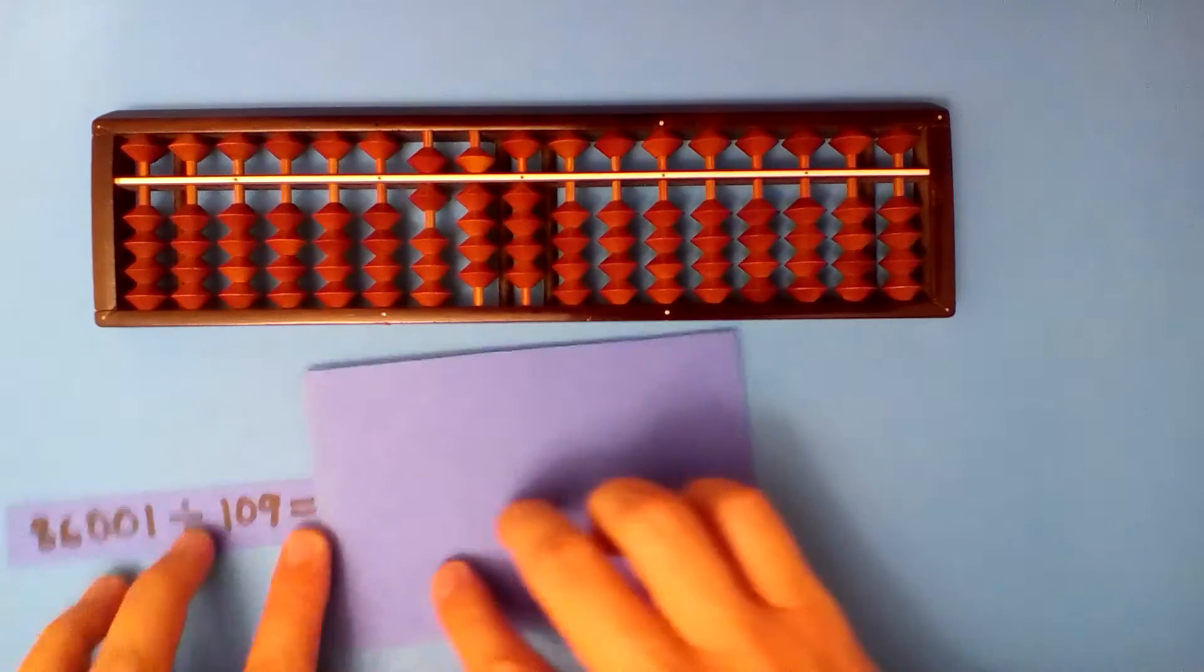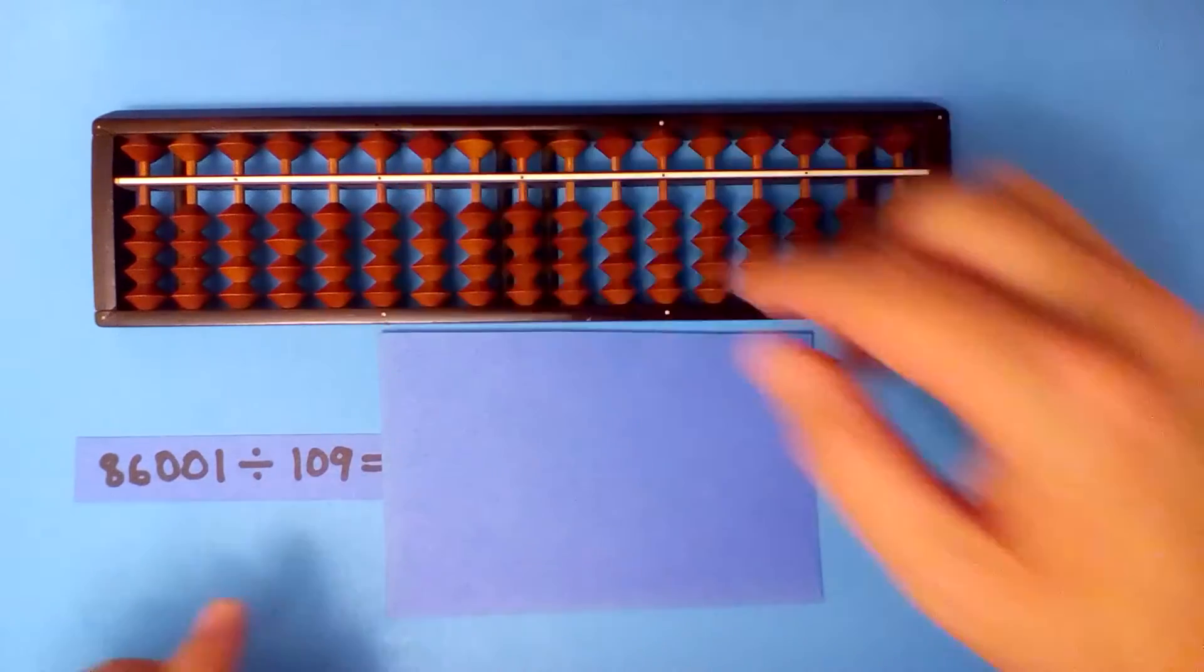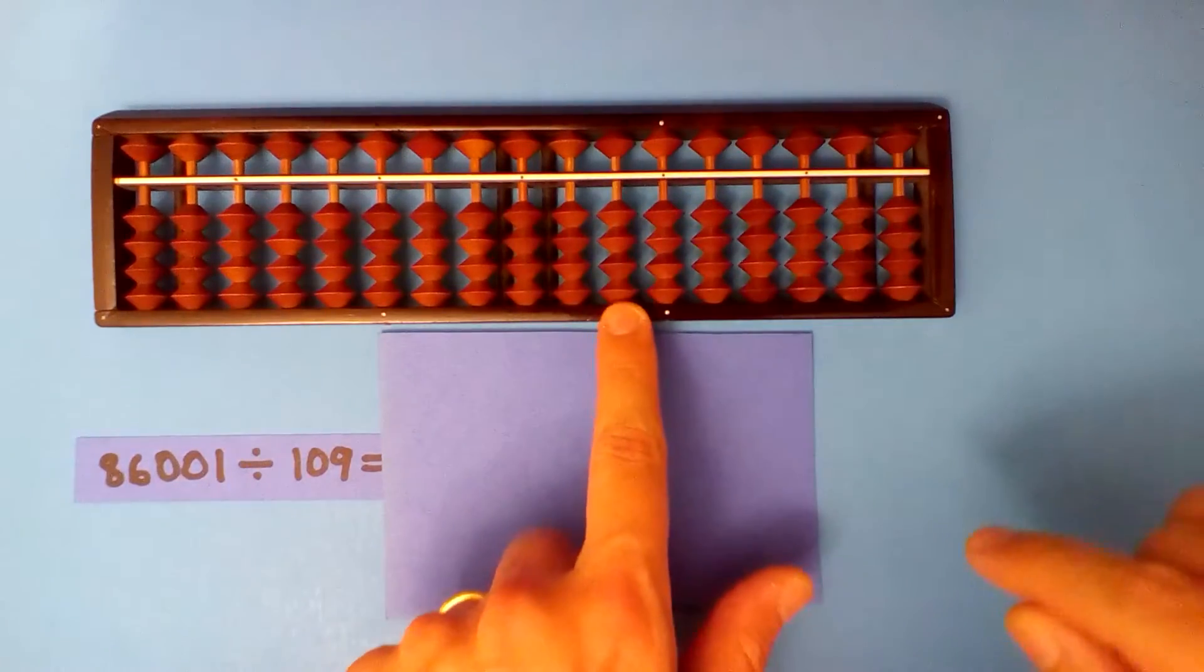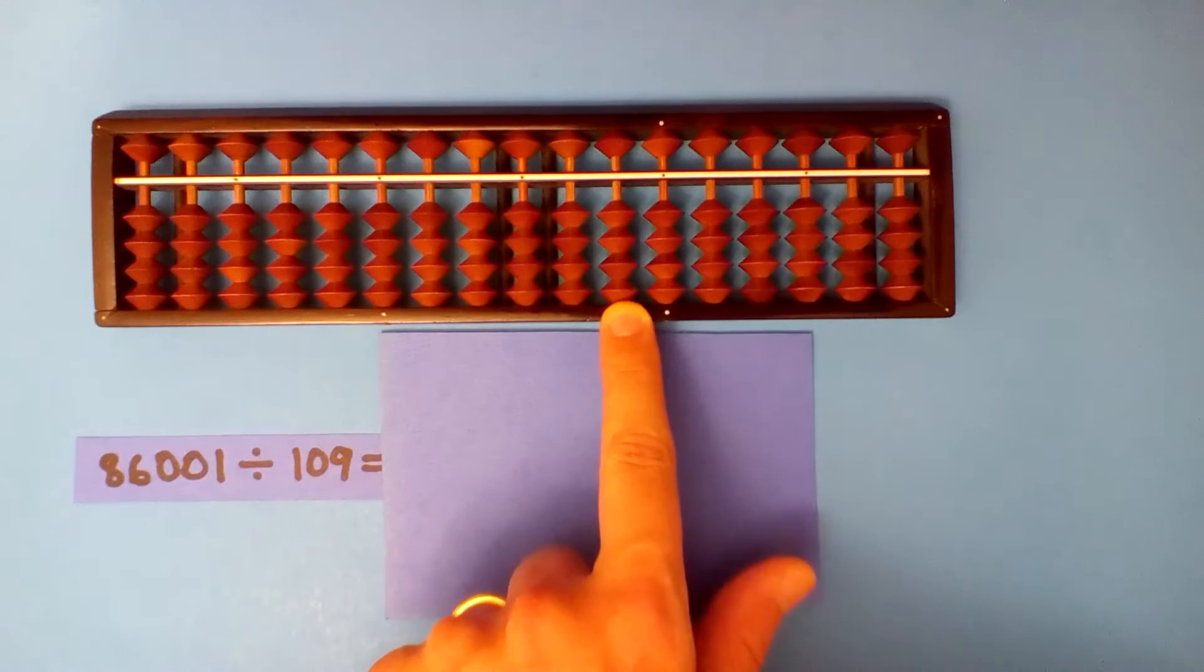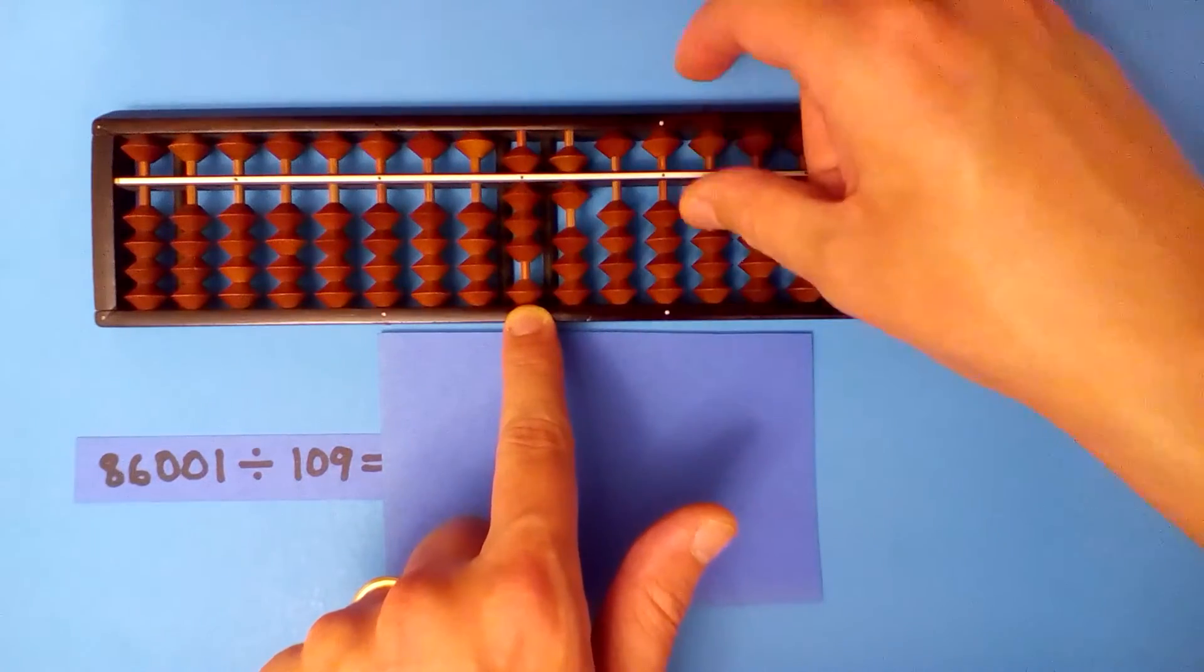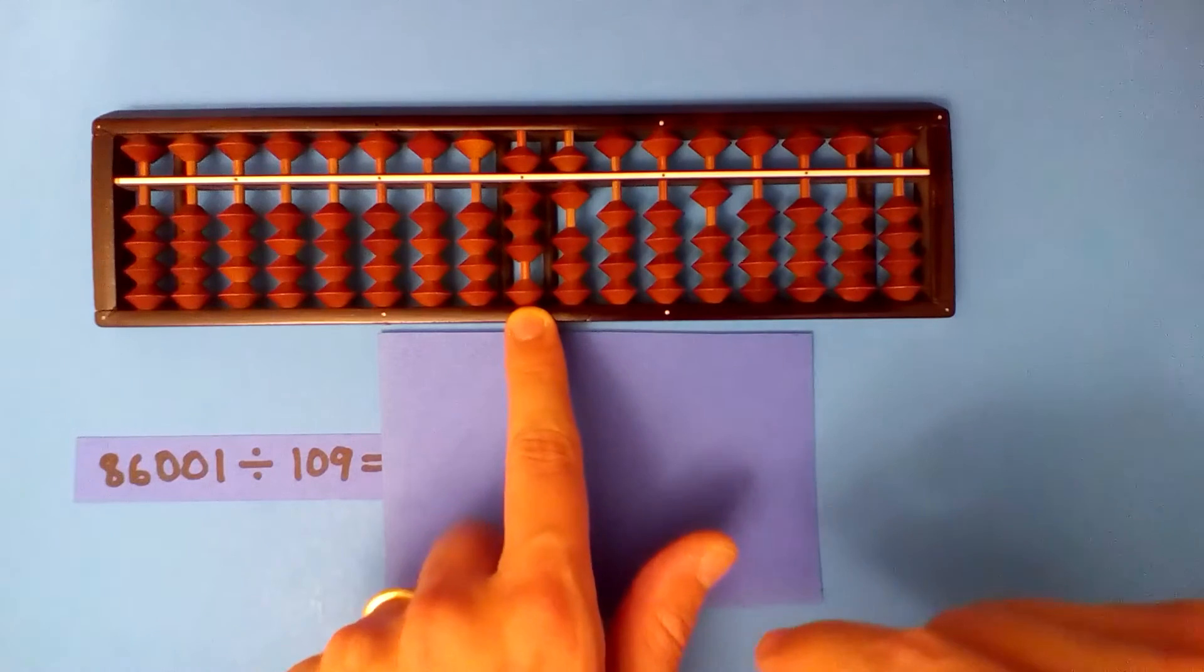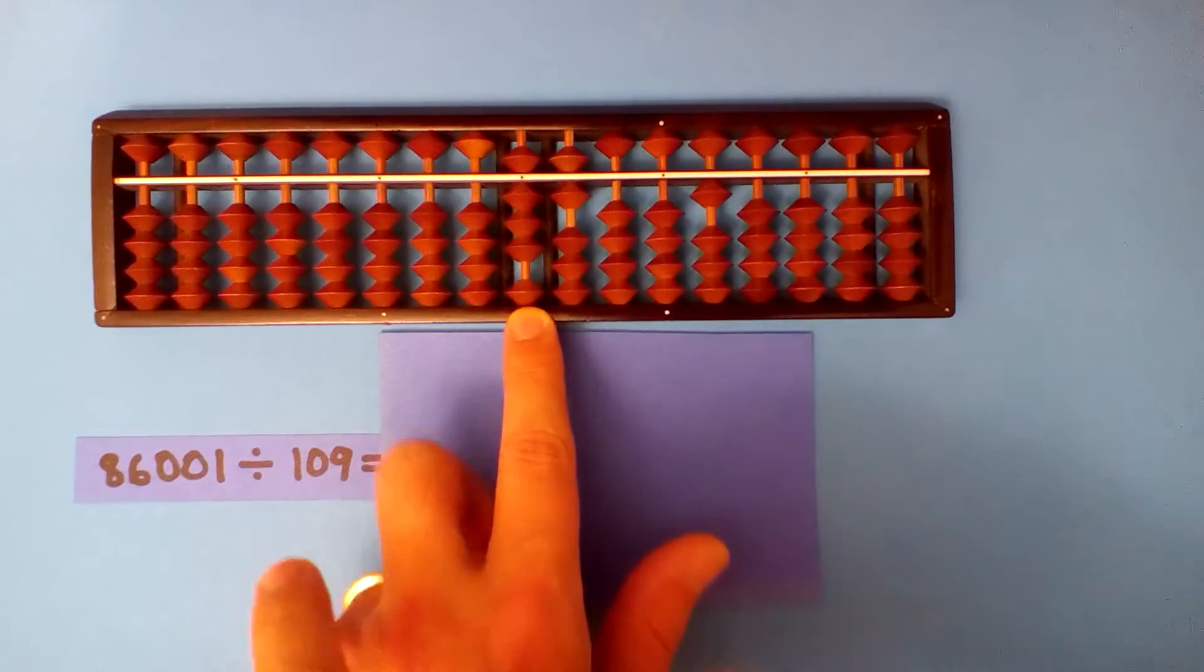Another one. Start on the hundredths, but there are two more digits in the dividend, so we go one, two. Set up the dividend and divide. About one, it's a little bit more than one though, so we'll be careful.